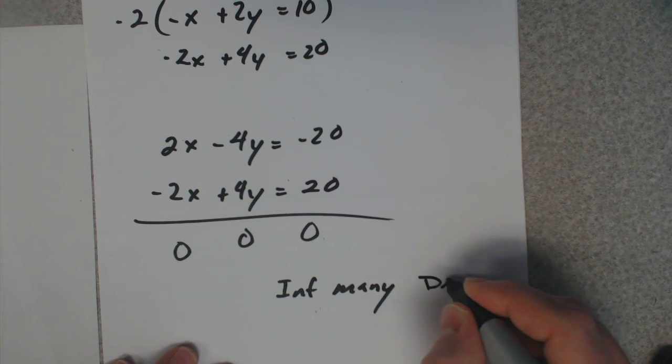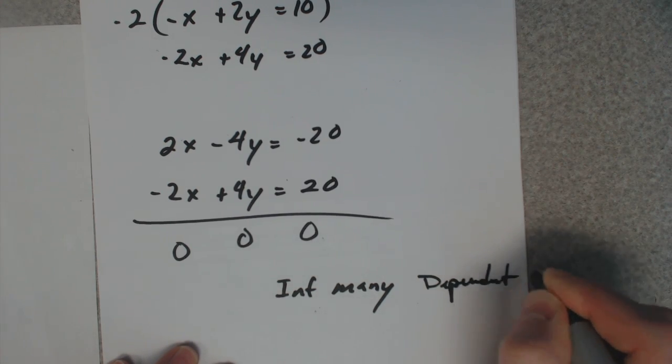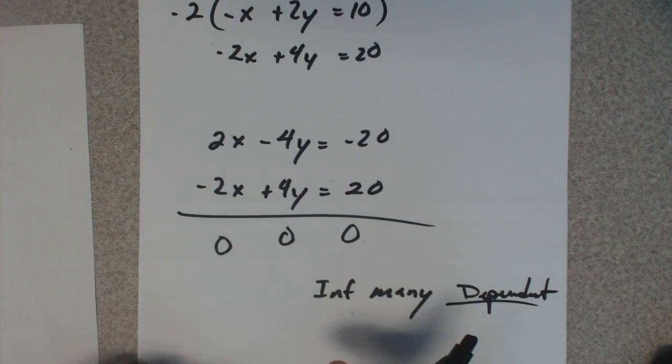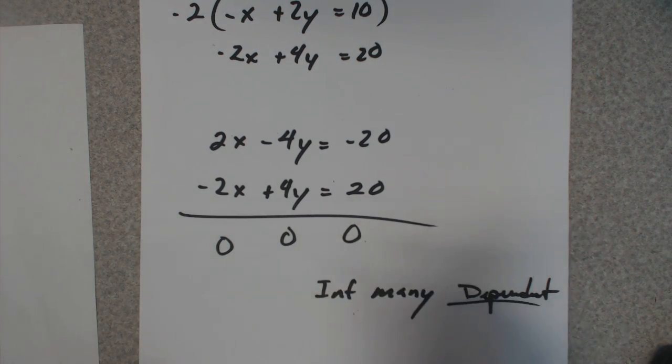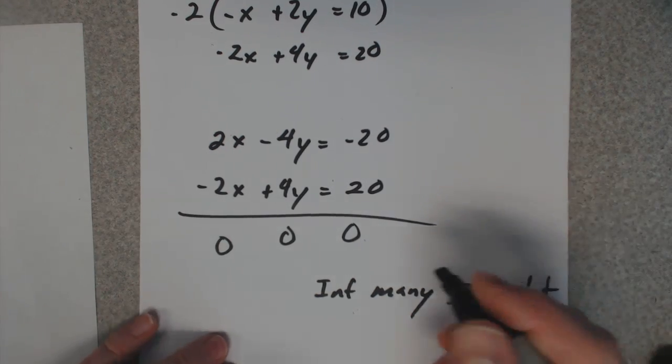Or in this case, we call it dependent. If you got all 0's and then a number, that's inconsistent. That's inconsistent or no solution.